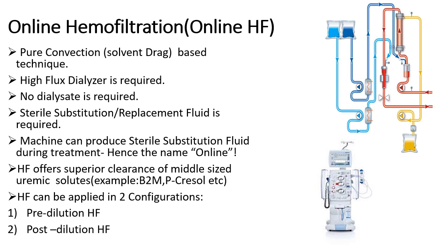For performing haemofiltration, you need a high flux dialyzer with very high water permeability. No dialysate is required because there is no diffusion. In order to compensate the fluid loss, you replace the fluid volume with an electrolyte solution known as substitution fluid or replacement fluid. The procedure is called online HF because the dialysis machine itself can produce the sterile substitution fluid required for treatment.